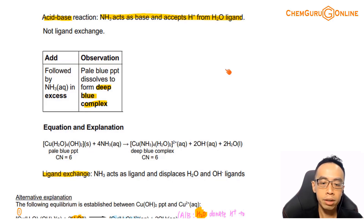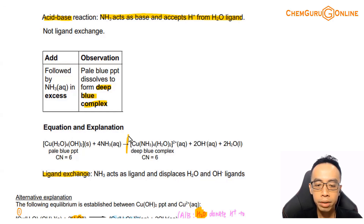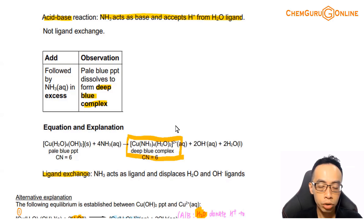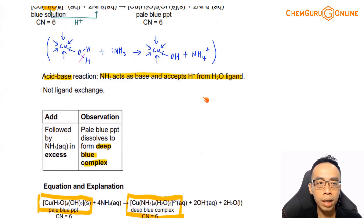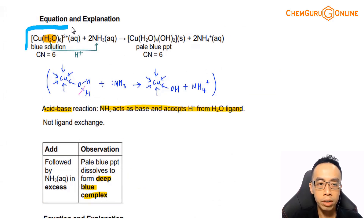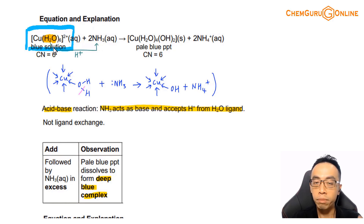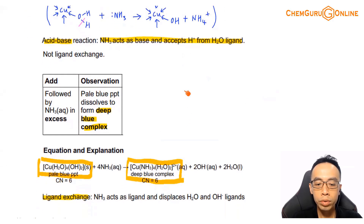We just need to memorize the formula for this deep blue complex: Cu(NH3)4(H2O)2 2+, deep blue color. The pale blue precipitate is Cu(OH)2(H2O)4. Copper 2+ surrounded by 6 water is a blue solution — we should already know that from secondary level. So we just need to memorize the pale blue precipitate formula and the deep blue complex formula.